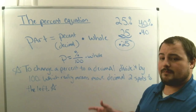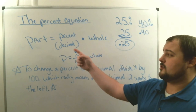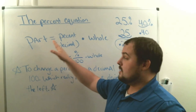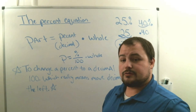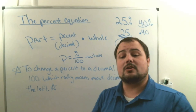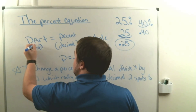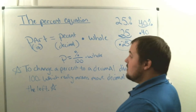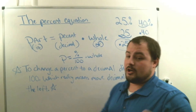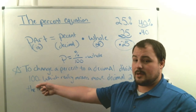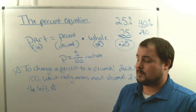In this lesson we'll change percents to decimals and use the equation — part equals percent as a decimal times the whole — to solve problems. Quick reminder: the word 'is' tells you it's the part, the word 'of' tells you it's the whole, and the percent is divided by 100, which is the same as changing it to a decimal.